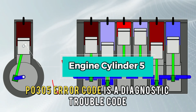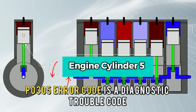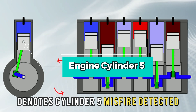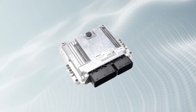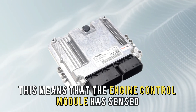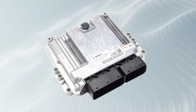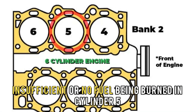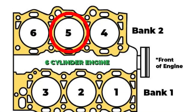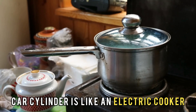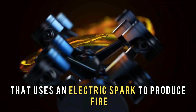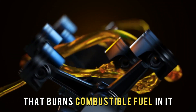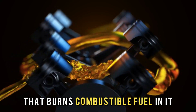The P0305 error code is a diagnostic trouble code that denotes Cylinder 5 misfire detected. This means that the engine control module has sensed insufficient or no fuel being burned in Cylinder 5. A car cylinder is like an electric cooker that uses an electric spark to produce a fire that burns combustible fuel in it.